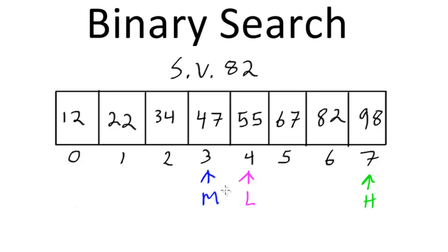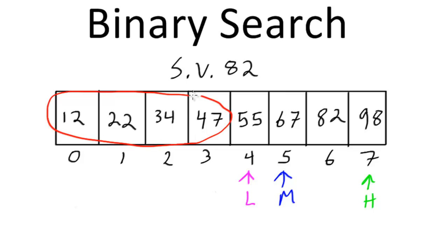We then update the midpoint. Midpoint is recalculated by taking the new low (4) plus high (7), giving 11, divided by 2 giving 5.5, which truncates to 5. So our new midpoint is 5. What we've effectively done is eliminated half of our search space — all the elements below the new low are no longer in our search space.